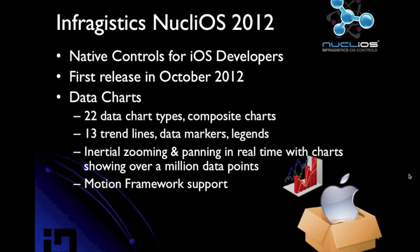The data chart is drawn from our award-winning XAML data chart, offering 22 chart types with composite charting, trendline support, data markers, and legends. It supports inertial zooming and panning in real time, can handle over a million data points with excellent performance, and includes our motion framework for smooth animated data transitions over time.